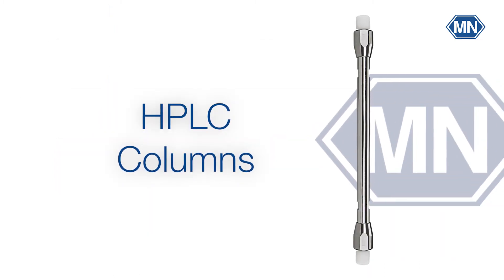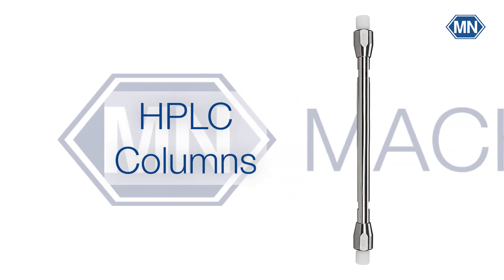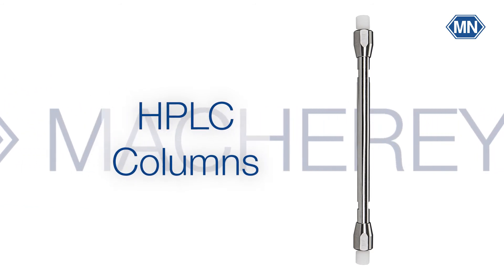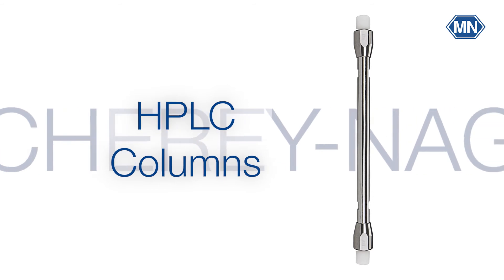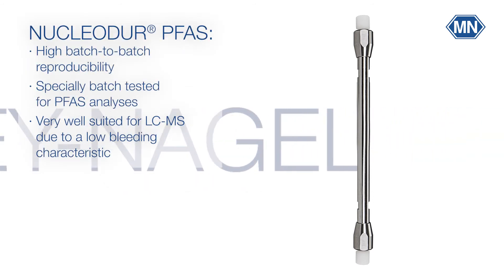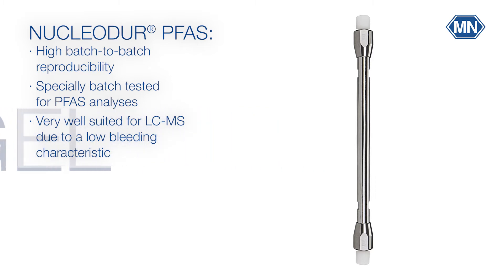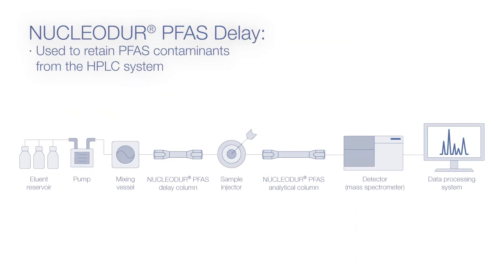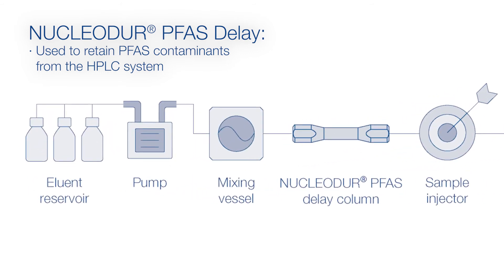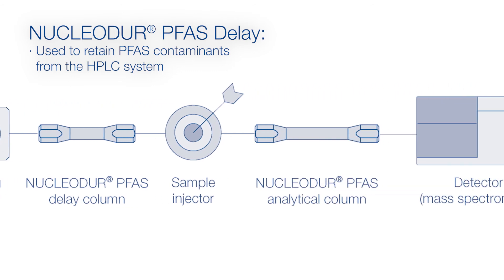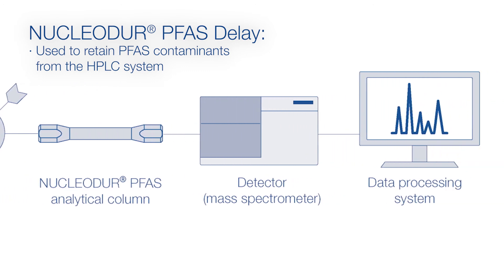HPLC columns. Subsequent chromatographic separation is often performed by HPLC. Macherey-Nagel developed for the analysis of PFAS the Nucleodur PFAS and Nucleodur PFAS Delay HPLC columns. Nucleodur PFAS HPLC columns provide a solution for analyzing PFAS substances. These columns show a high batch-to-batch reproducibility, are specially batch tested for PFAS analyses, and are very well suited for LC-MS due to low bleeding characteristics. The Nucleodur PFAS Delay column provides high retention for PFAS compounds and is used to retain PFAS contaminants from the HPLC system which could otherwise falsify the sample being analyzed. For this purpose, the Nucleodur PFAS Delay column is connected in flow direction between the mixing vessel and the sample injector.